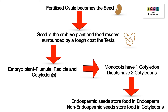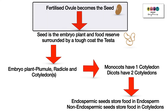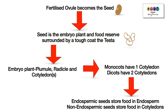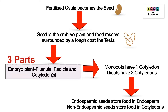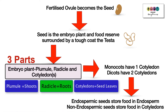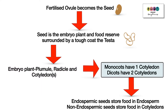To summarize the key facts: the fertilized ovule becomes the seed. The seed is the embryo plant and its food reserve, surrounded by a tough coat called the testa. The embryo plant is made up of three parts: the plumule, which forms the shoots; the radicle, which forms the roots; and the cotyledons. Monocots have one cotyledon in their seeds; dicots have two cotyledons.